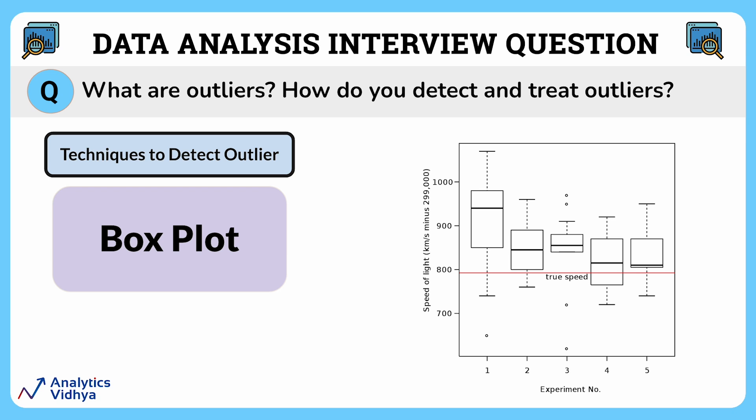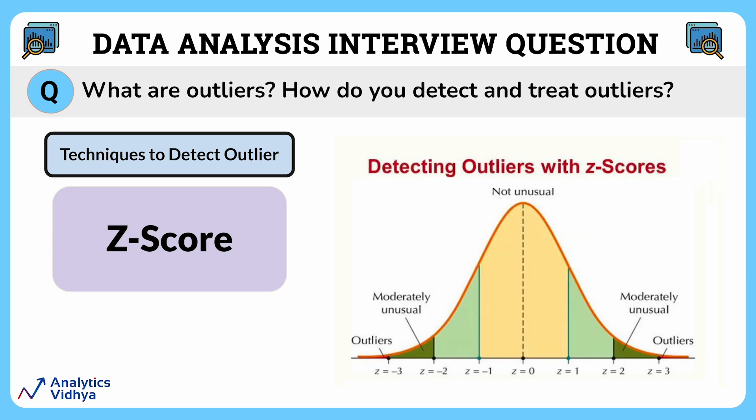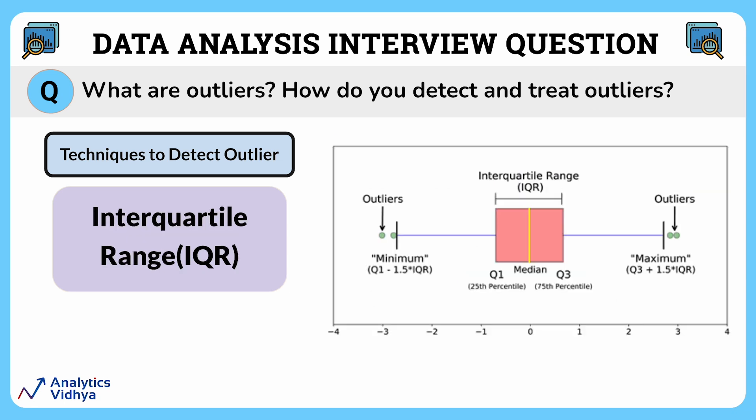How do you detect outliers? To detect outliers, there are quite a few ways. The first one is a box plot — using a box plot, we can easily find outliers. The second technique is z-score, and then there's interquartile range. So these are the techniques to detect outliers.